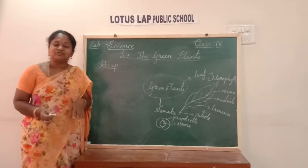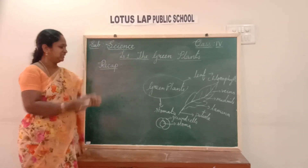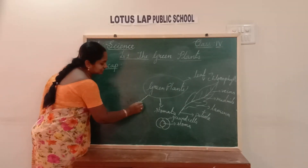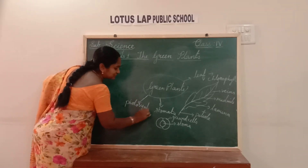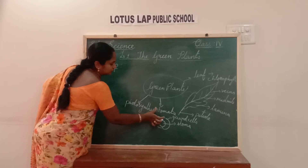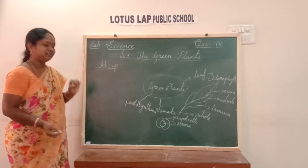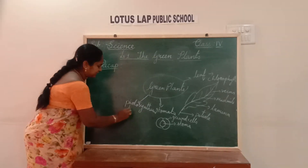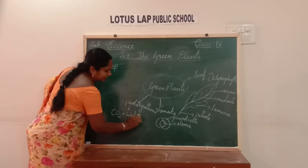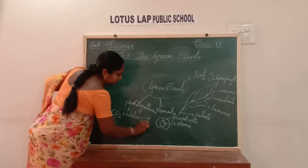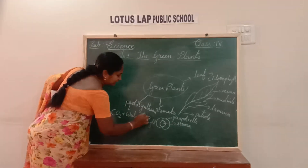What is the function of guard cells? It helps to open and close the stomata. Next, photosynthesis. What is photosynthesis? Photosynthesis means the process of preparing food — the process of preparing food by the plant. How does it prepare food? It takes in carbon dioxide and water, in the presence of sunlight and chlorophyll.